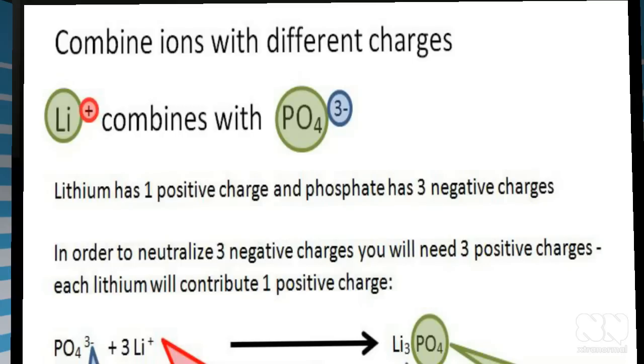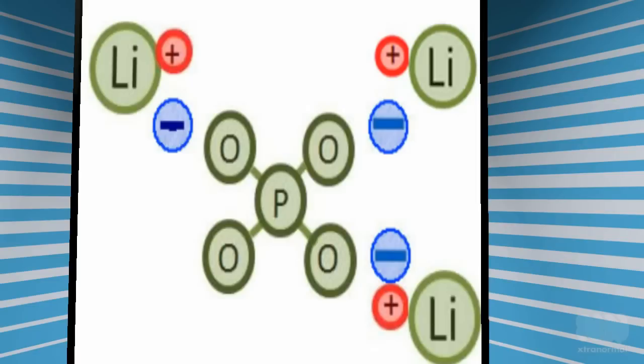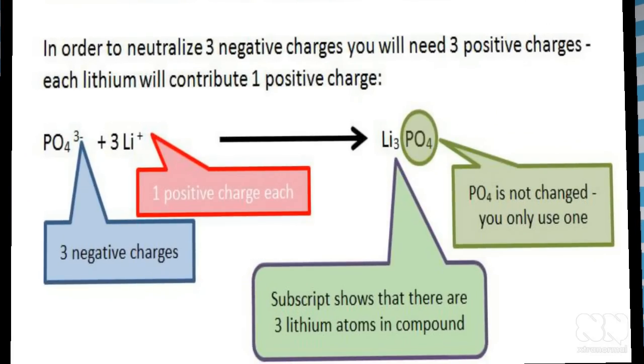Therefore, to form a neutral compound, you will need the phosphate ion with its three negative charges and three lithium ions to contribute a total of three positive charges, one for each lithium ion. When they combine, you will have a neutral compound because the three negative charges are equal to the three positive charges. And when you look at the formula for lithium phosphate, you can see a subscript of three next to the lithium, which means that there are three lithium atoms in the compound. The subscript of four is for the four oxygens in the phosphate ion.